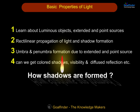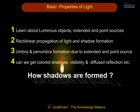Basic properties of light. Learn about luminous objects, extended and point sources, rectilinear propagation of light and shadow formation, umbra and penumbra formation due to extended and point sources. Can we get colored shadows? Topics also include visibility, diffuse reflection, and related concepts.